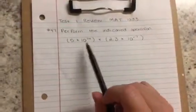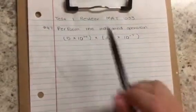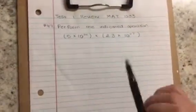5 times 10 to the 14th power times 2.3 times 10 to the negative 7th power. So combining two numbers in scientific notation.